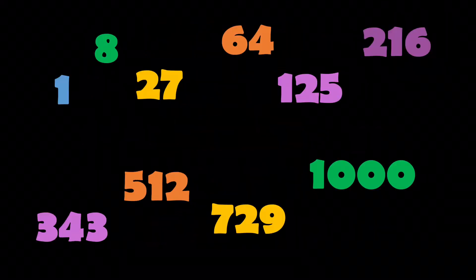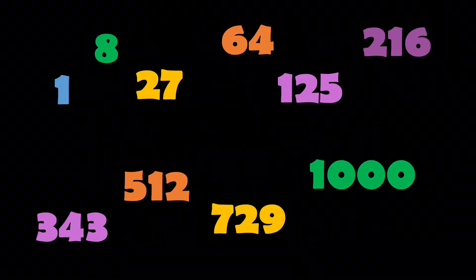Here is a list of the first 10 cubed numbers. And it's interesting to see how quickly these numbers get bigger and bigger and bigger. We go from one, eight, 27, 64, 125, 216, 343, 512, 729, up to a thousand. So the jumps between each cubed number get larger and larger as we go.